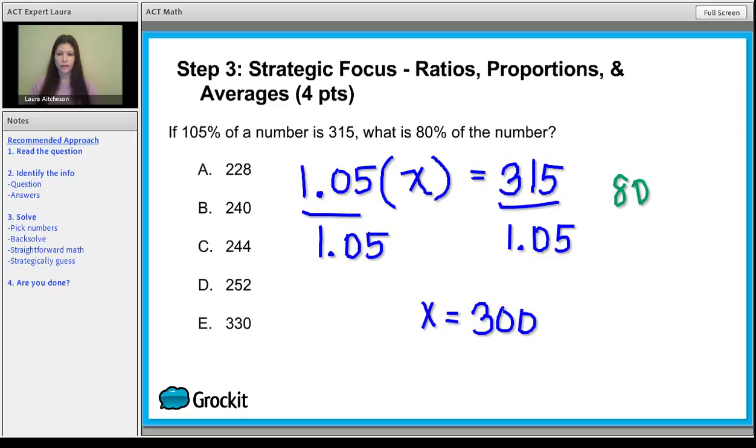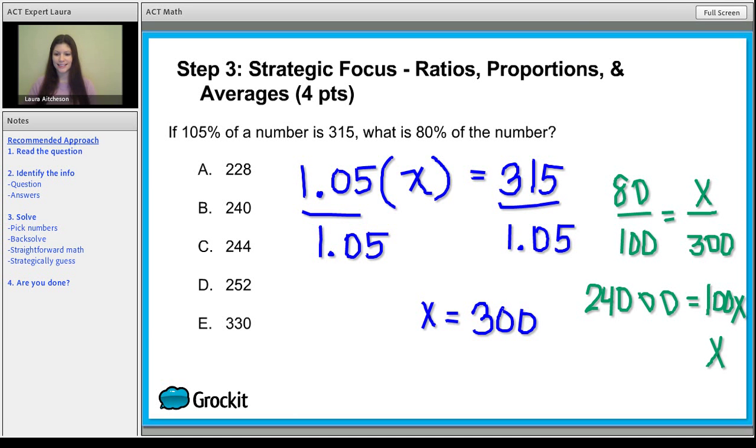So 80 over 100, which is 80%, is equal to how much of 300? When you cross multiply and do the math, you're going to get actually a really big number. You're going to get a bunch of zeros. You're going to get 24,000 is equal to 100x. Divide both sides by 100, x equals 240, which is answer choice B. So this is another foundational concept. You can pick up four points by acing ratios, proportions, and averages.